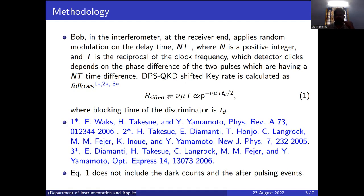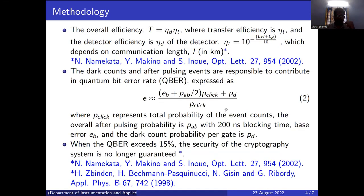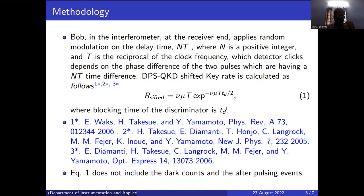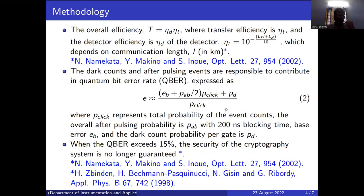DPS QKD is given by expression 1, and all the parameter values are already given in my separate paper. This equation does not include any dark count or after-pulsing events. But in a realistic scenario,